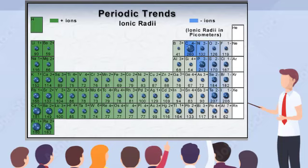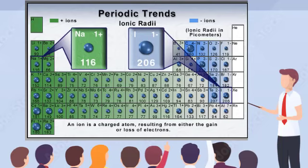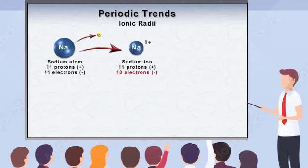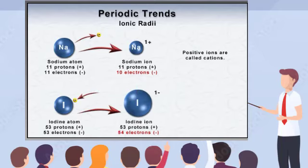Another trend related to size occurs in ionic radii. An ion is a charged atom resulting from either the gain or loss of electrons. If an atom loses an electron, it takes on a positive charge and is called a cation. If an atom gains an electron, the increase in negative charge makes it a negatively charged ion, or anion. Remember, ions have the same number of protons and neutrons as atoms — they just differ in the number of electrons.